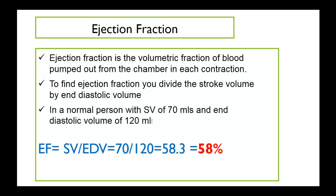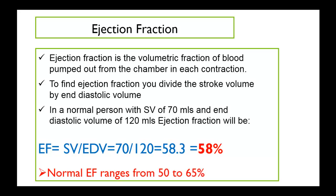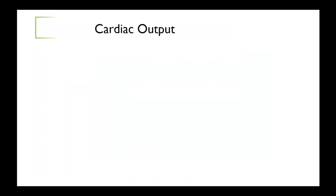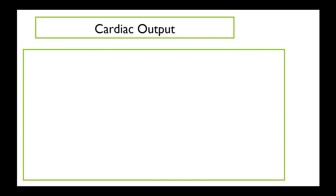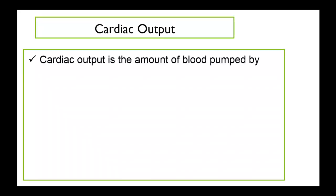These are the findings in a normal person who has a stroke volume of 70 milliliters and a diastolic volume of 120 milliliters. Normally, the ejection fraction ranges from 50 to 65 percent. This means that in each contraction, the heart has to pump at least 50 percent of its blood from the left ventricle.